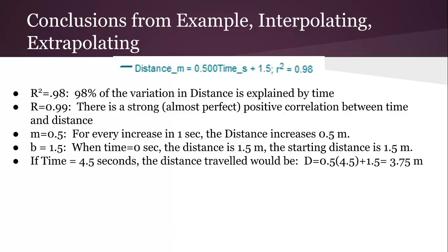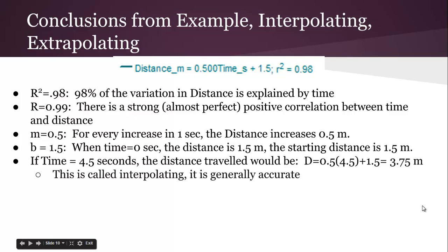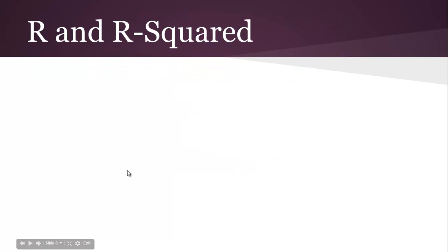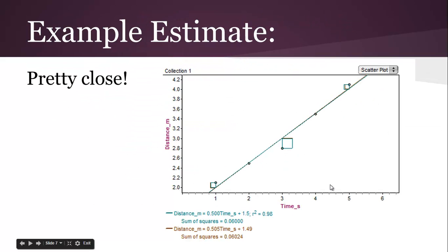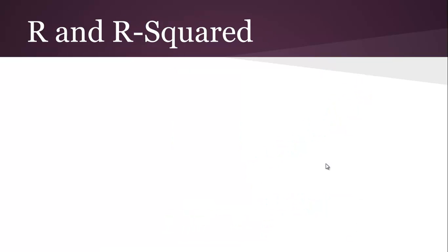If time is 4.5, so we could actually plug in a number and we get 3.75. It's called interpolating. It's generally really accurate. It means that 4.5 is within the data. Go back and you can see the graph. 4.5 is right here. So any kind of prediction within the domain is pretty accurate.